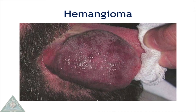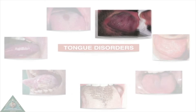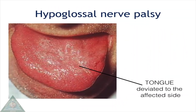Hemangioma is a hamartoma of blood vessels and appears as a reddish or purplish swelling, most commonly affecting the tongue, which is compressible. Hypoglossal nerve palsy affects the muscles of the tongue and the tongue deviates to the affected side on protrusion.